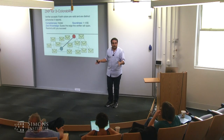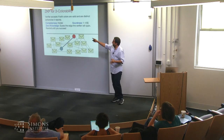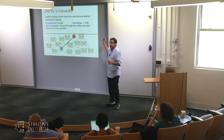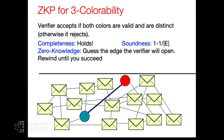We have constructed a zero-knowledge proof for graph 3-coloring with completeness holding with probability 1 and soundness error 1 − 1/E. That's bad soundness, so we repeat this proof system sequentially to bring it down—order E times for constant soundness, more for negligible. Can we repeat in parallel? That's an open problem: whether parallel repetition preserves soundness and zero-knowledge. It does work for honest verifier zero-knowledge, but for the malicious verifier setting it remains open.